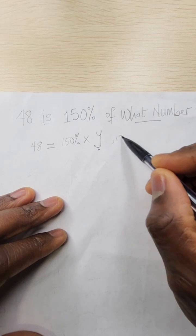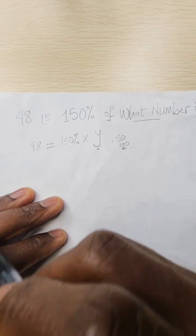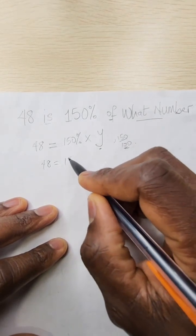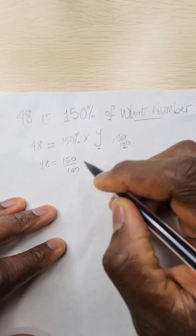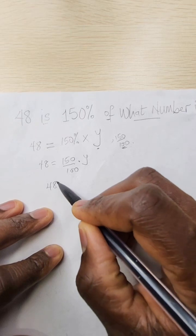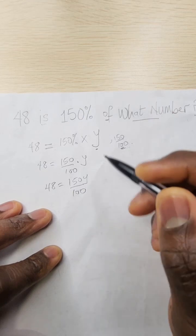So 150% is the same thing as 150 over 100. So this becomes 48 equals 150 divided by 100 times y. So we have 48 equals 150y divided by 100.